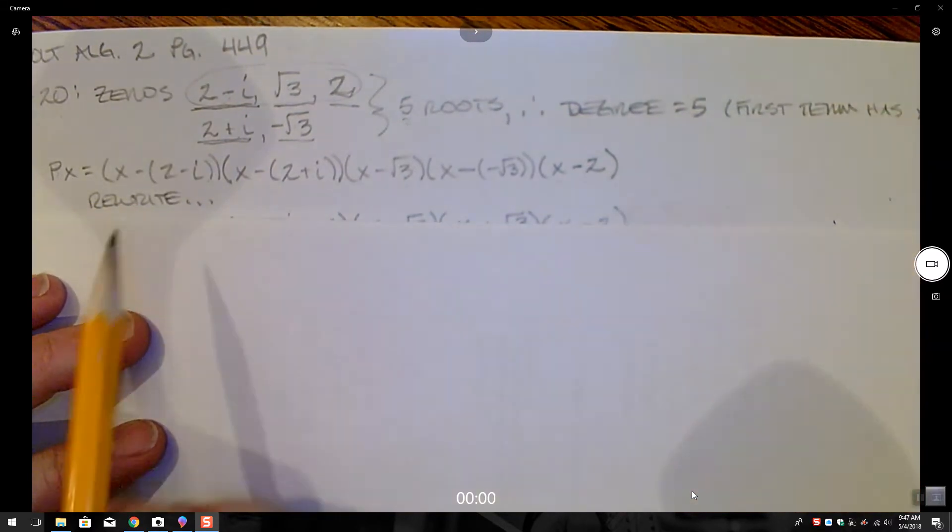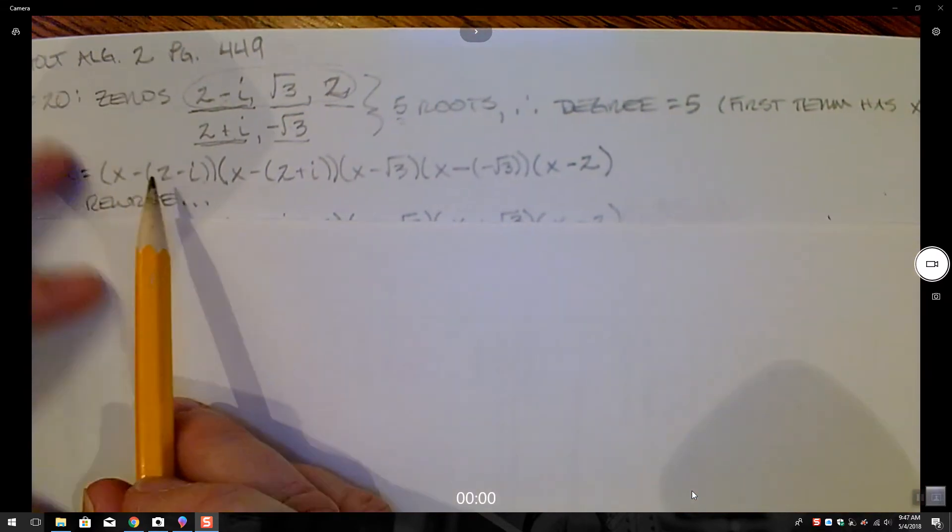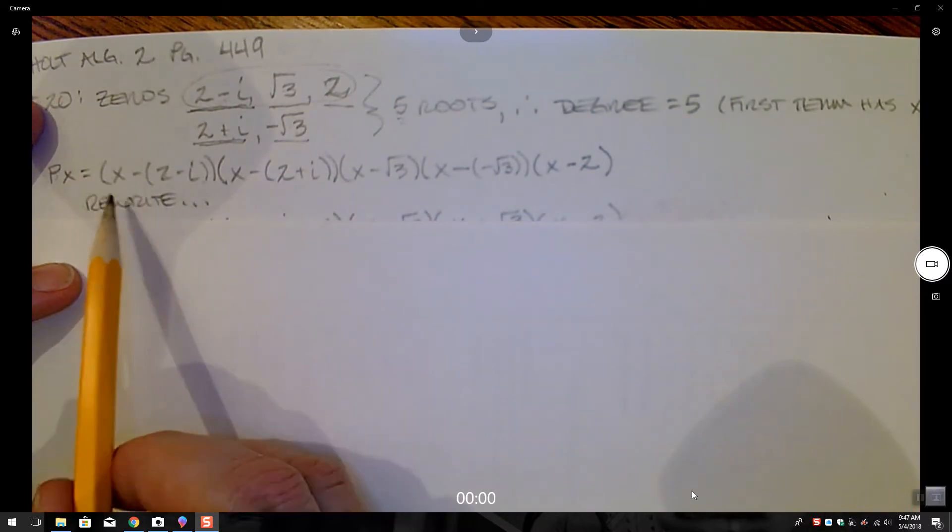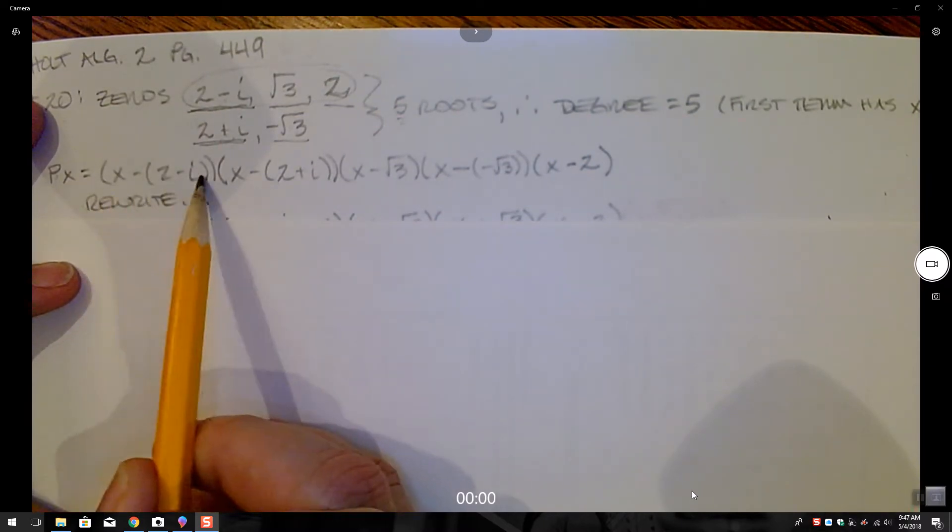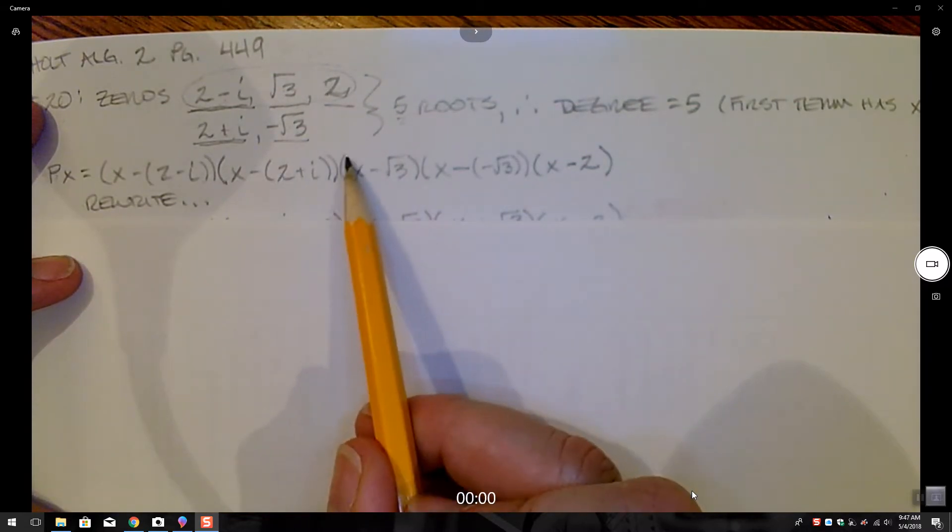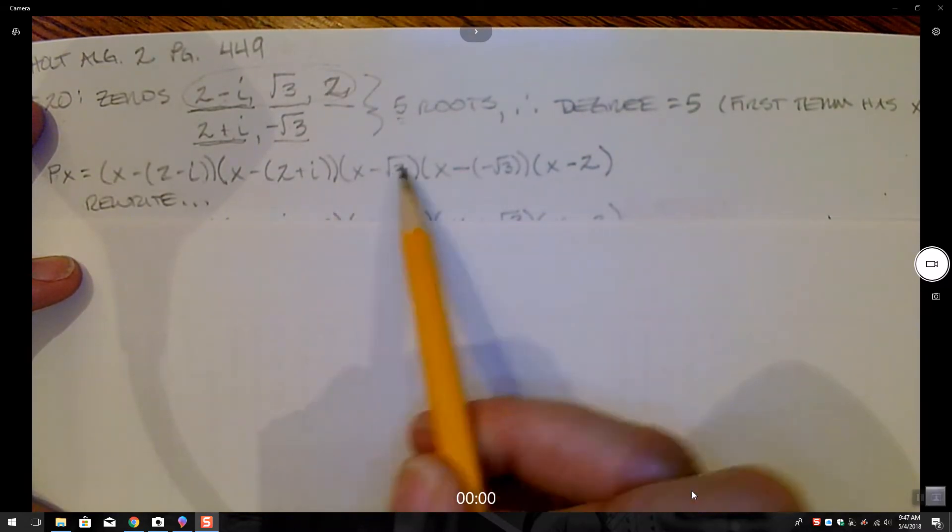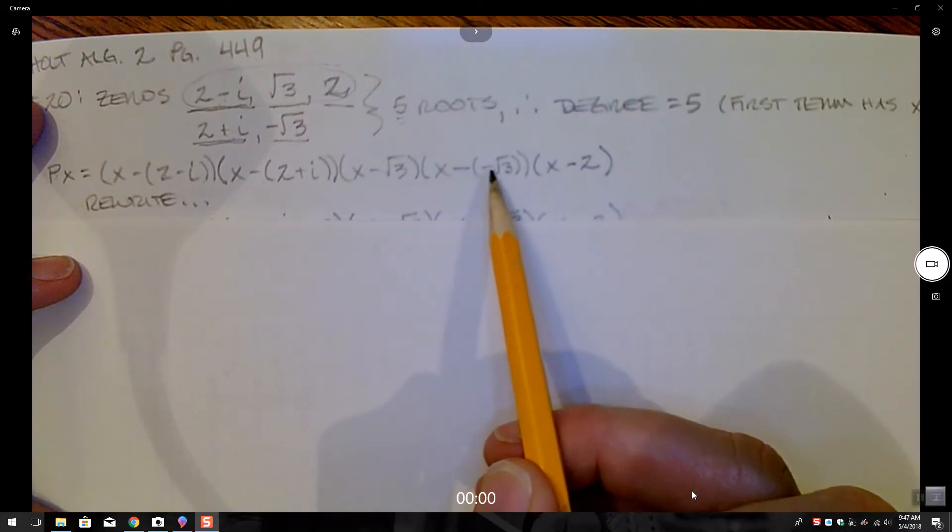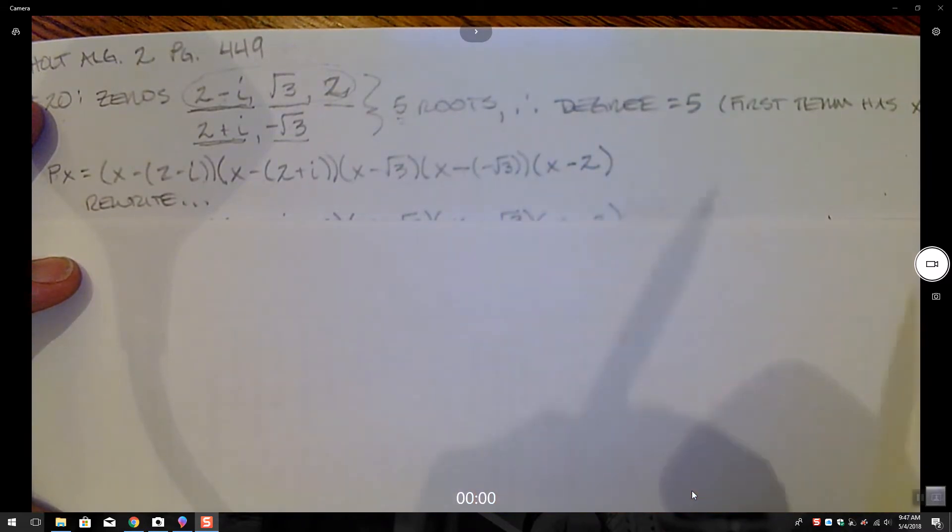So here's my setup. Just like the book's instructions tell us to do, we have an x minus the quantity 2 minus i, and x minus the quantity 2 plus i. We have an x minus root 3, we have an x minus negative root 3, and we have an x minus 2.